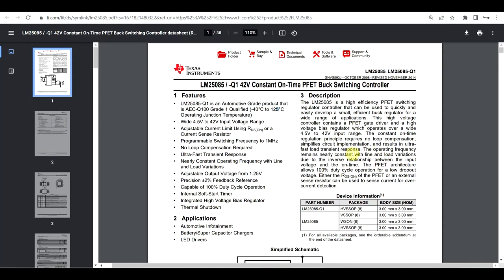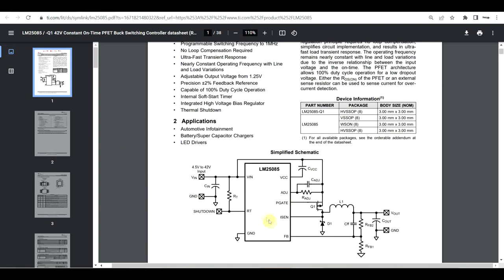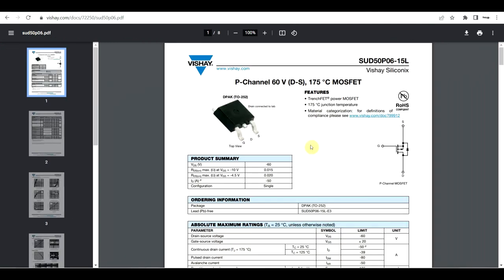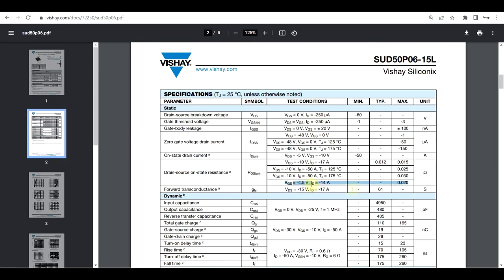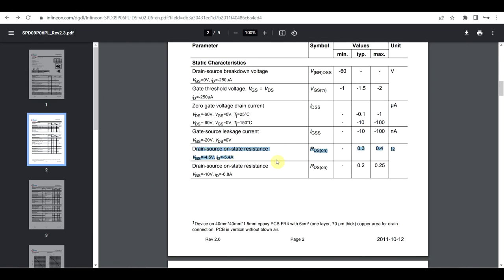To highlight the impact of these two different categories of losses, I will be testing a converter with two different transistors. On the one side a transistor that should have low conduction loss, and on the other hand a transistor that should have lower switching losses. So let's start by looking at the tested components, starting with the controller. I will be using the LM25085 as a controller, so this is a fairly basic P-channel driver. I have two P-channel MOSFETs in DPAC package to test today. First is the SUD50P06, which under these conditions has a maximum on resistance of 20 milliohms, and the SPD09P06, which under the same conditions has a maximum on resistance of 400 milliohms.